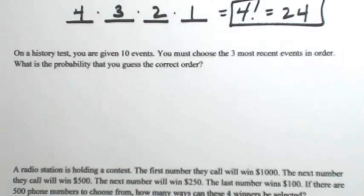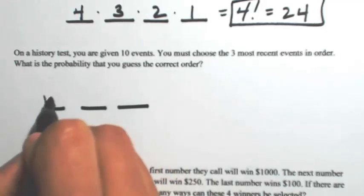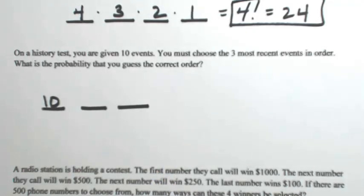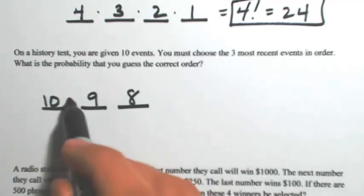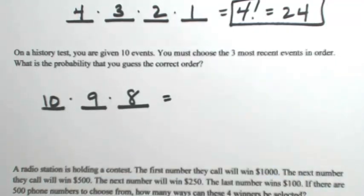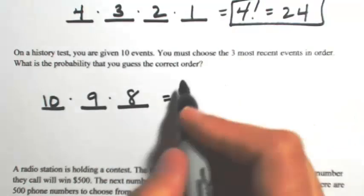On a history test, you are given 10 events and must choose the three most recent events in the correct order. Even though we're given 10 events, we're only going to use three of them. If you have 10 events to choose from, the first one has 10 possibilities. You're not going to reuse that event, so there are 9 for the second and 8 for the third. By the Fundamental Theorem of Counting, we multiply: 10 times 9 times 8 equals 720 ways.